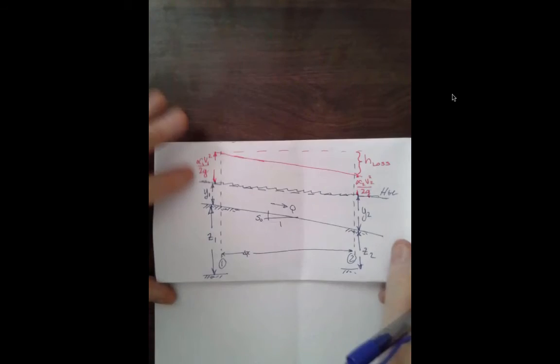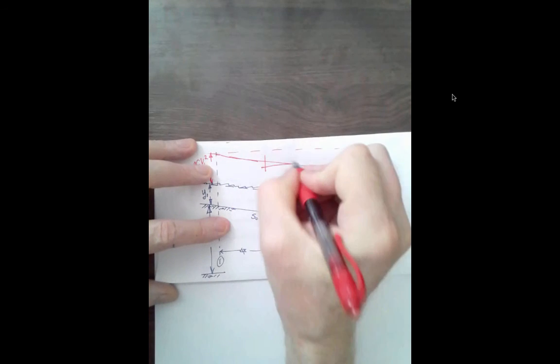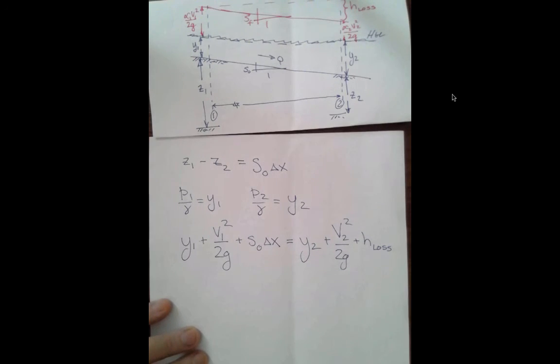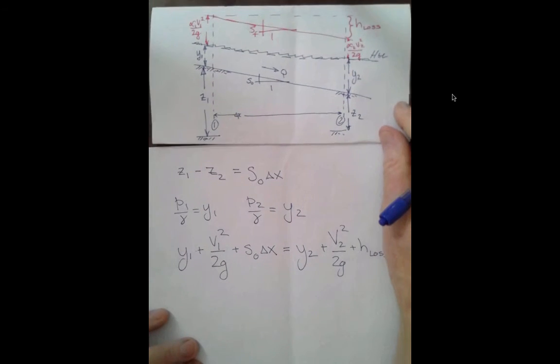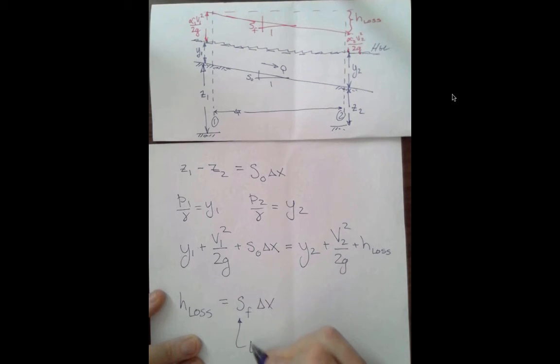Now let's return to our drawing and recall that the slope of the energy grade line is S sub F. So the head loss term is equal to S sub F times delta x and generally this is called the friction slope or the energy slope.